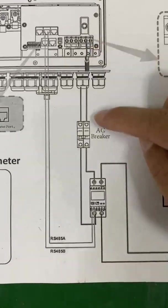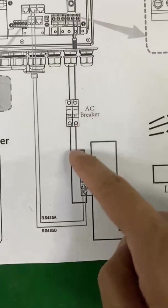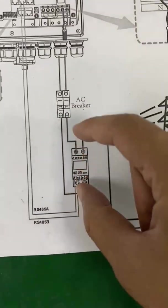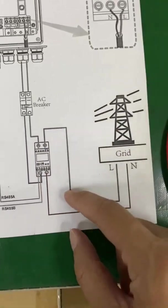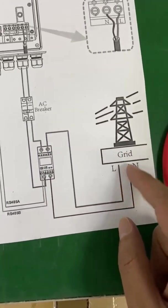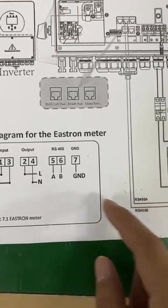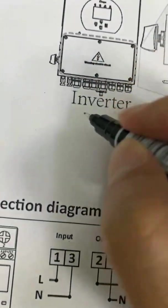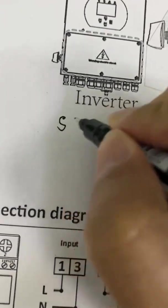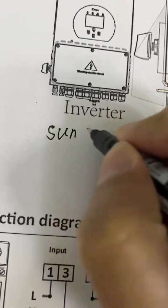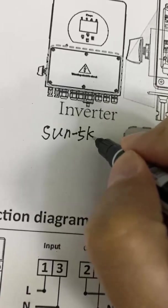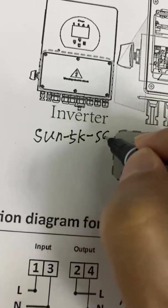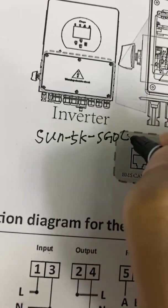Here is the grid port. And it goes through our AC breaker. And then input the energy meter here. And here is the output cable, connect it to the grid. Okay. Let's write it down here. This is the Sun 5K SG-04.